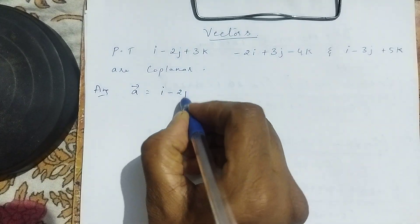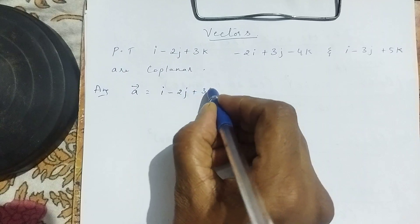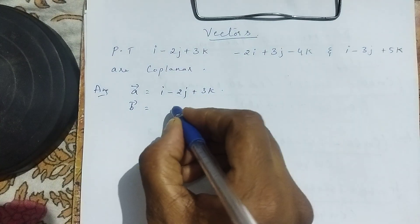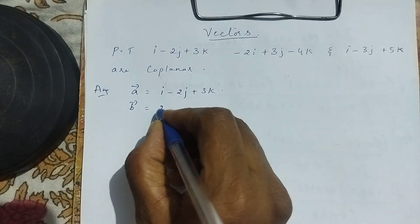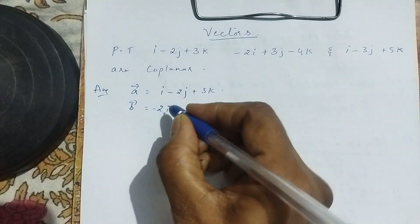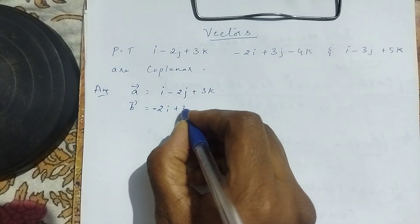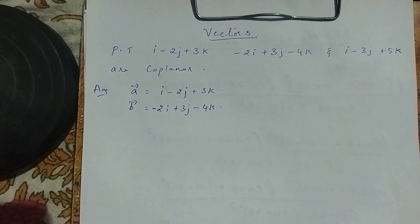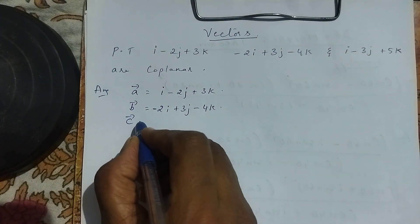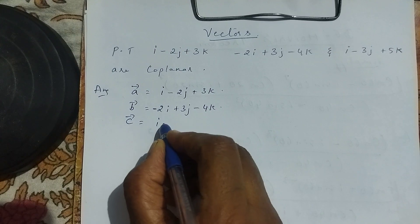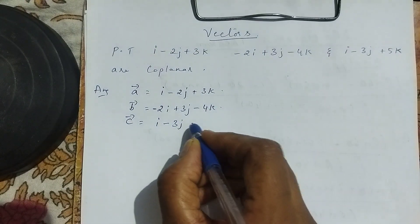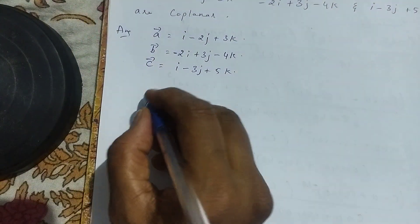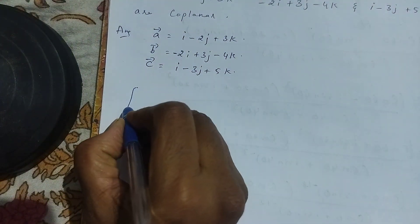First, we write: vector a equals i minus 2j plus 3k; vector b equals minus 2i plus 3j minus 4k; vector c equals i minus 3j plus 5k. Now, to find whether they are coplanar, we proceed with the determinant method.